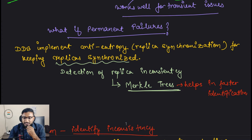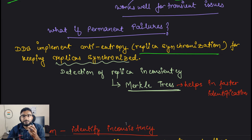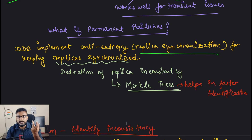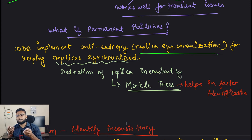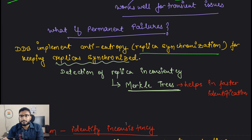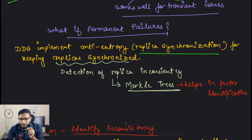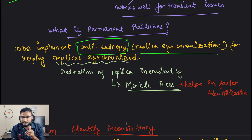In those kinds of permanent failure scenarios, you will need something called replica synchronization. If a replica is permanently down and never comes back, you need a mechanism to synchronize that node with another replica. This process is called an anti-entropy process. In case of replica synchronization, we have to detect the replica inconsistency - what data was supposed to be replicated but wasn't.